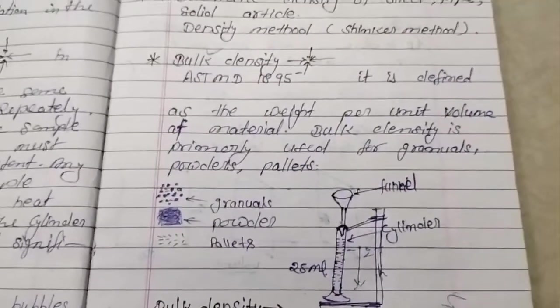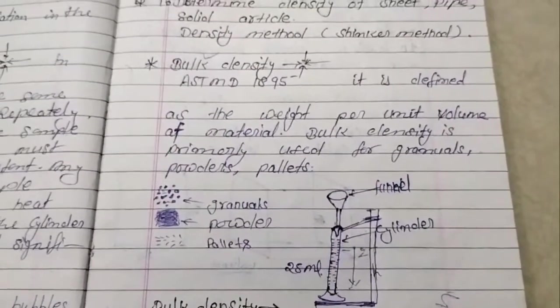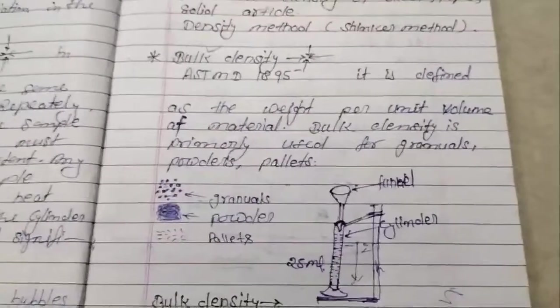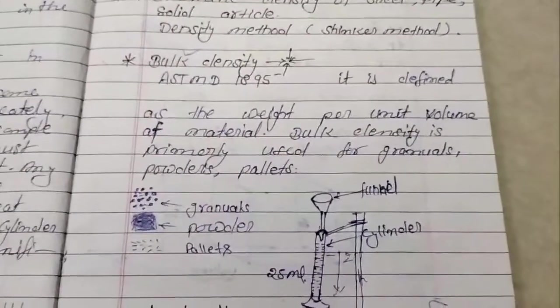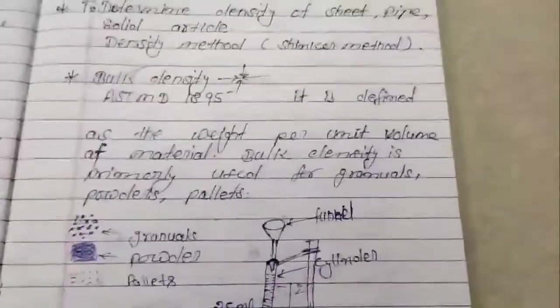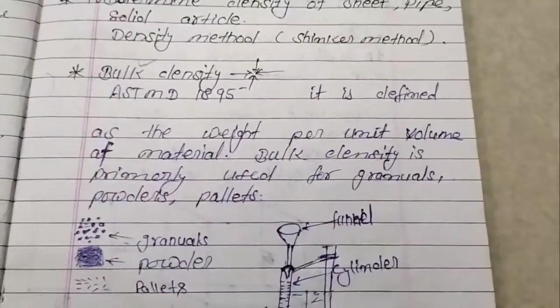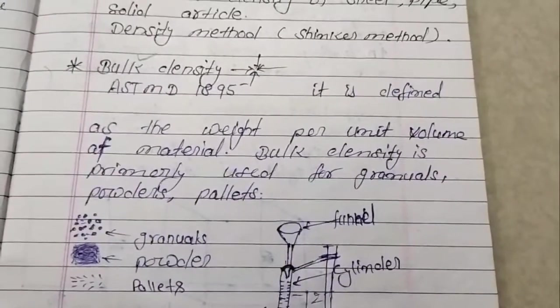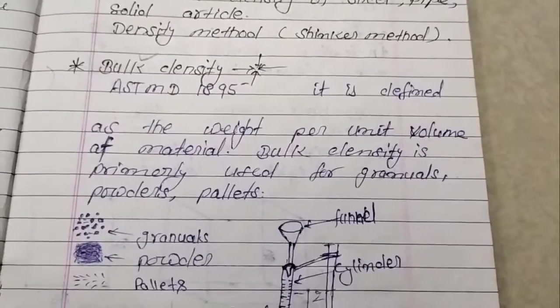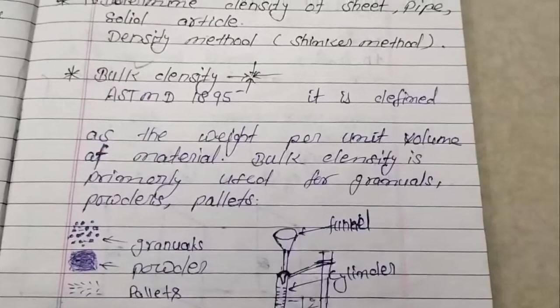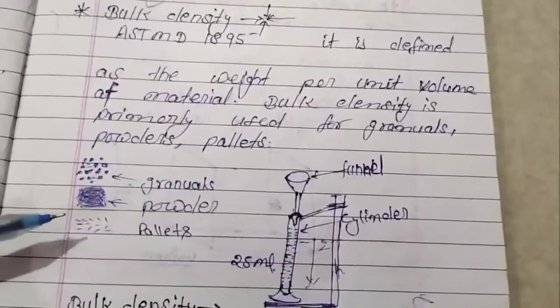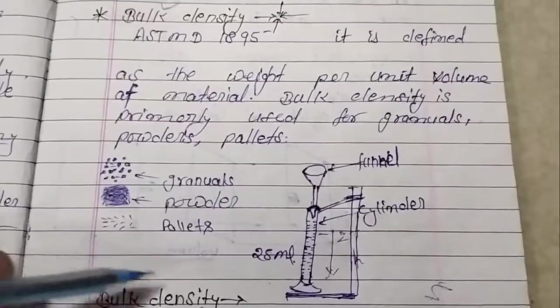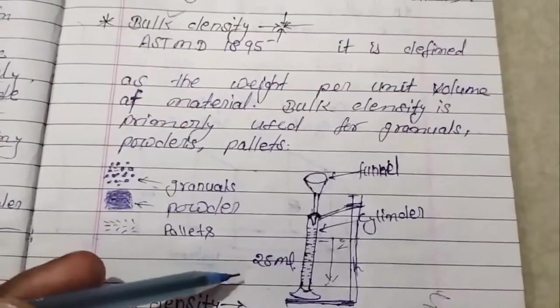First, we define bulk density. Bulk density is defined as the weight per unit volume of material. Bulk density is primarily used for granular form, powder form, and pellets. The weight per unit volume is called bulk density.